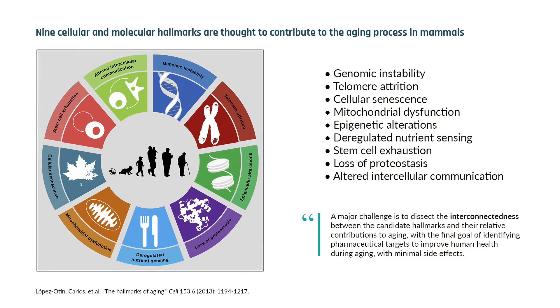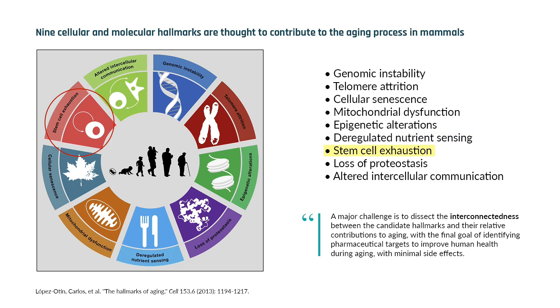There are some pretty well-defined hallmarks of aging — things like genomic instability, telomere shortening, cellular senescence, mitochondrial dysfunction, epigenetic alterations, nutrient sensing dysfunction, and stem cell depletion. These hallmarks are accepted within most of the scientific community as together seeming to drive the aging process at the molecular and cellular level. I'm curious what your thoughts are on what the major drivers of aging are, caveats included, and why it's important to really understand what those drivers are.